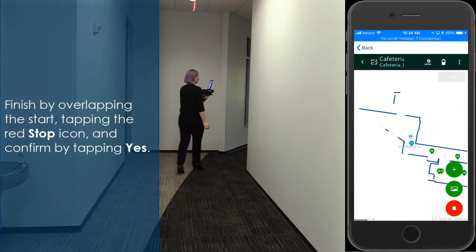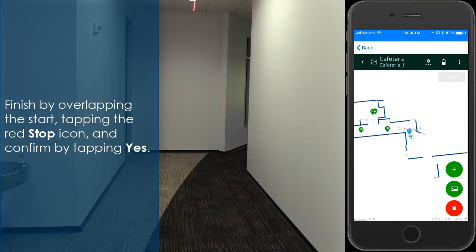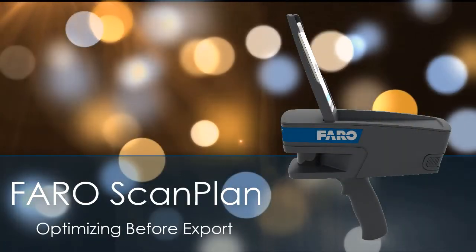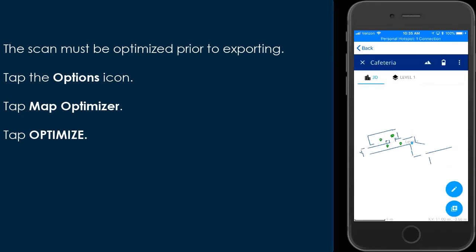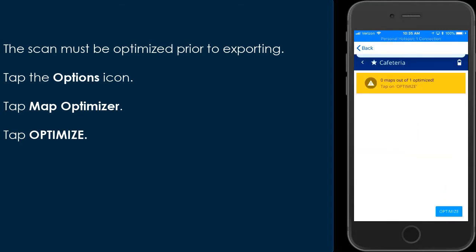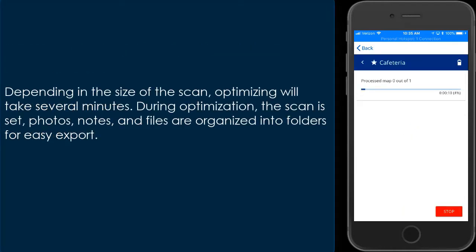Finish by overlapping the start, clicking the red Stop icon, and confirm by clicking Yes. FaroScan Plan — Optimizing before Export. The scan must be optimized prior to exporting. Tap the Options icon, then tap Map Optimizer, then tap Optimize. Depending on the size of the scan, optimizing will take several minutes. During optimization, the scan is set and photos, notes, and files are organized into folders for easy export.